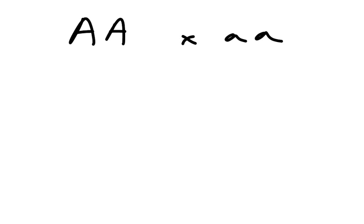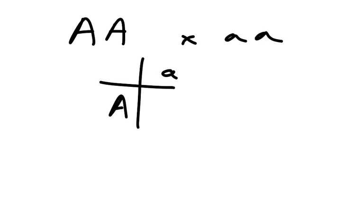If I cross this with this, we put the gametes into a Punnett square — all of them are going to have that phenotype, that genotype, and then that phenotype. So this is a dominant homozygote crossed with a recessive homozygote, all produced from the heterozygote.